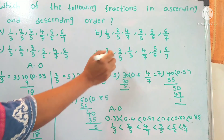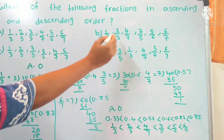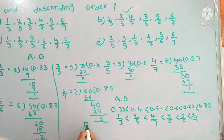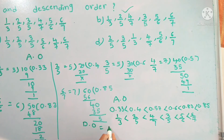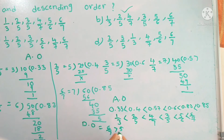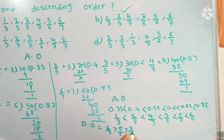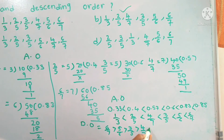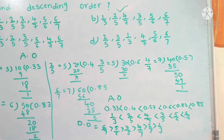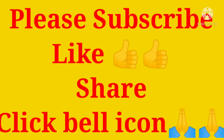Checking the options, option B is in ascending order, so the correct option is B. Now for descending order — big to small: 6 by 7 is greater than 5 by 6 is greater than 3 by 5 is greater than 4 by 7 is greater than 2 by 5 is greater than 1 by 3. Thank you for watching — please subscribe, like, share, comment, and click the bell icon.